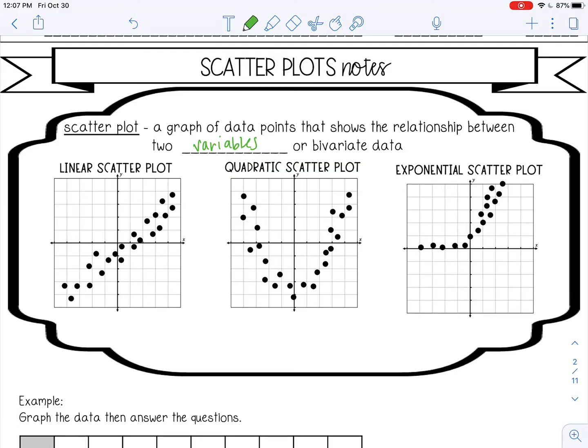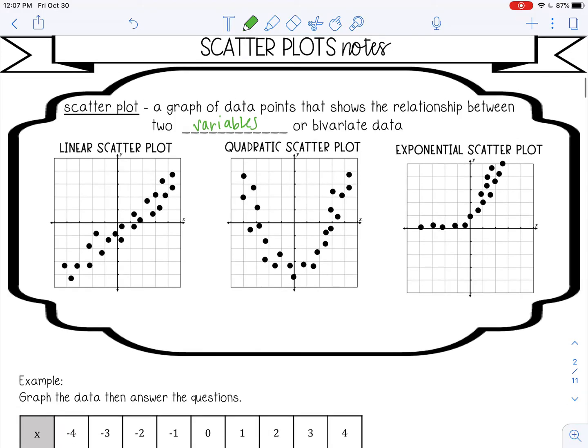So scatterplots can mimic different functions. You can have a linear scatterplot where the points are all really close to a line. You can have a quadratic where they look more like a parabola and then an exponential where they have that J shape.